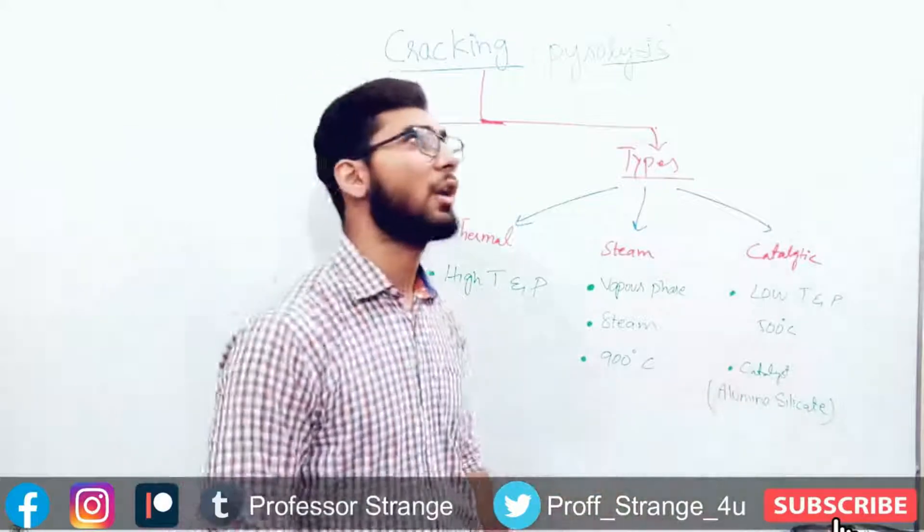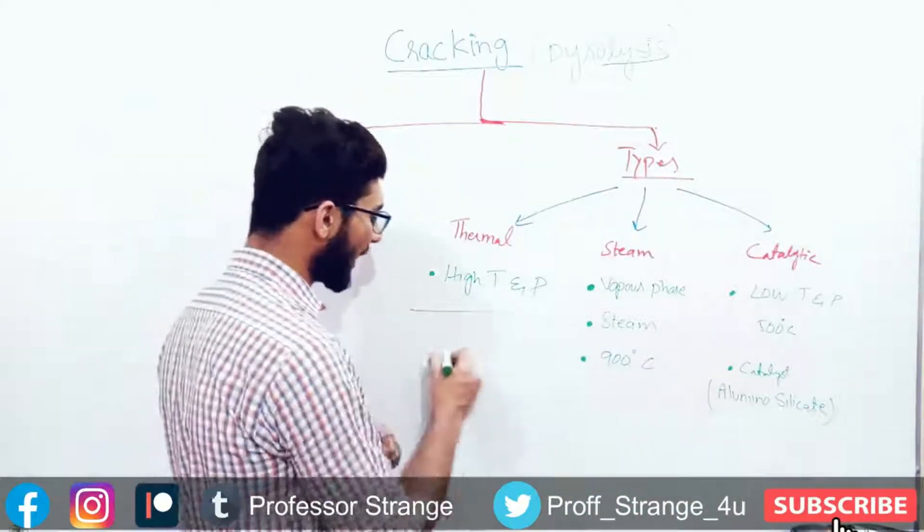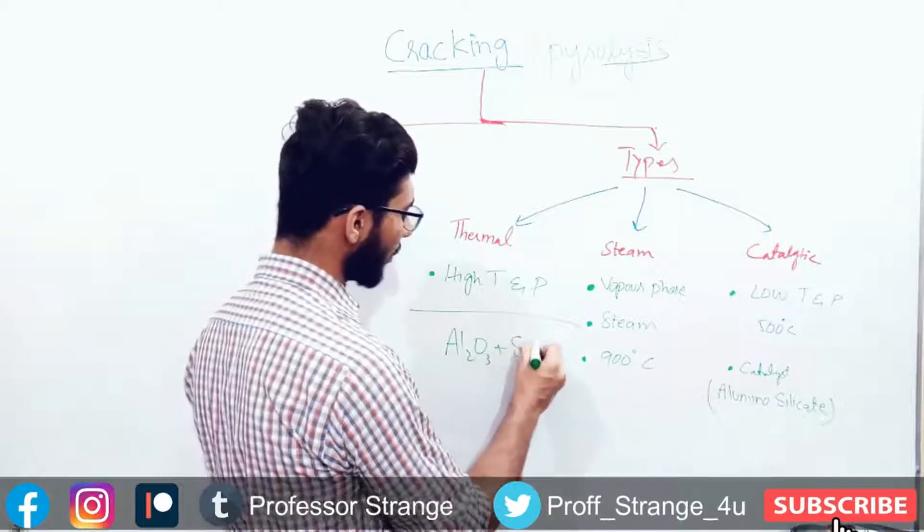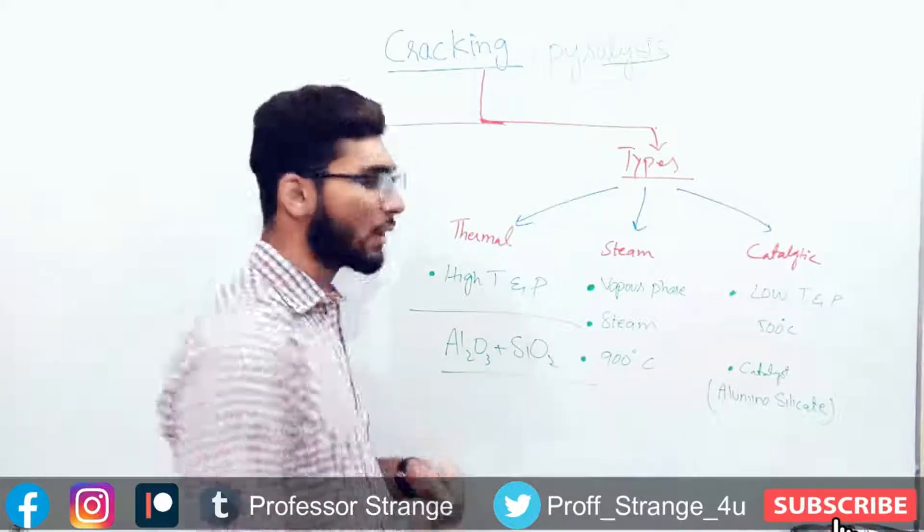Aluminosilicate. Aluminosilicate is the formula: Al2O3 plus SiO2. This is aluminosilicate.